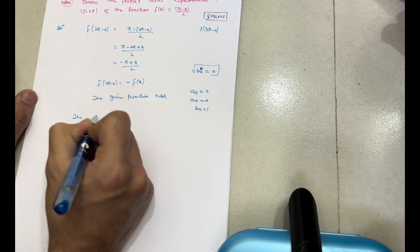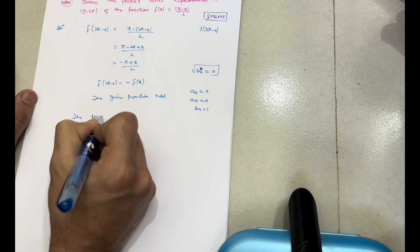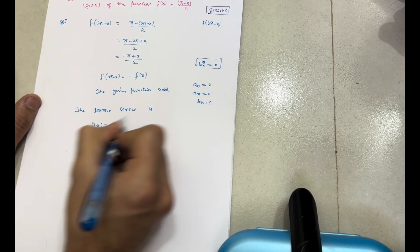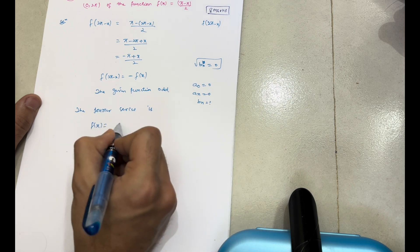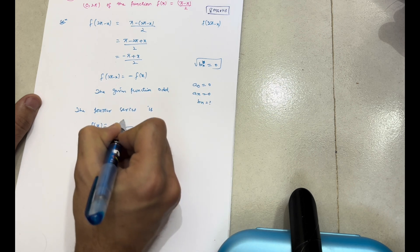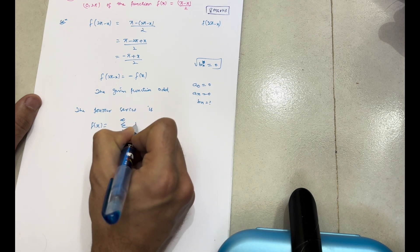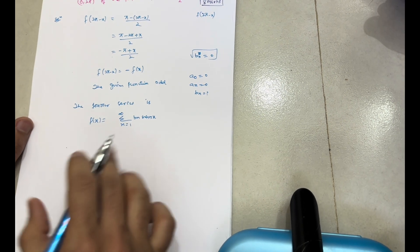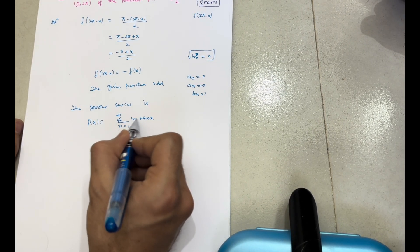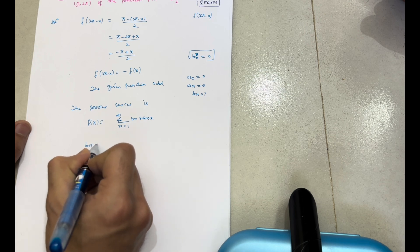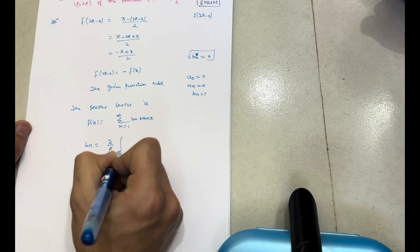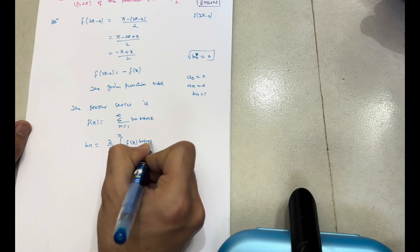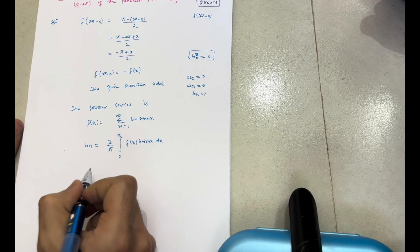Now the required Fourier series: since the function is odd, we only calculate bn. So we write f(x) = Σ (n=1 to ∞) bn sin(nx). This is the required Fourier series form. Now we have to calculate the bn value using: bn = (2/π) × ∫₀^π f(x) sin(nx) dx.